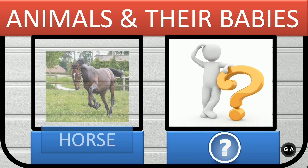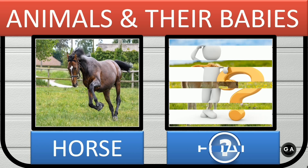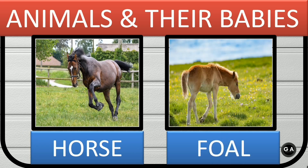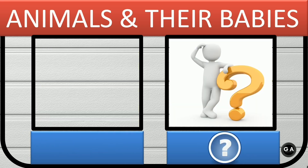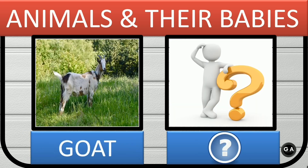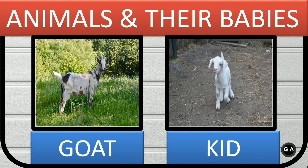Horse. Horse's baby is foal. Goat. Goat's baby is kid.